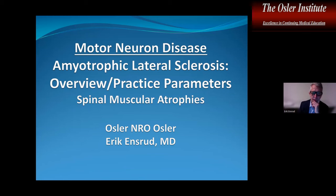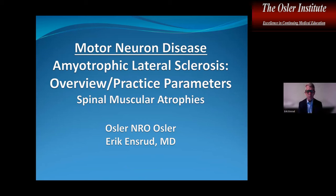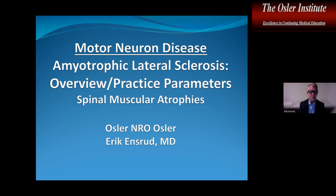We'll talk about amyotrophic lateral sclerosis. Whenever there are practice parameters set up by the American Academy of Neurology, those are really high yield for the board. I've incorporated the ALS practice parameter into this talk, so remember those are high yield things to study. We'll also touch on spinal muscular atrophies.